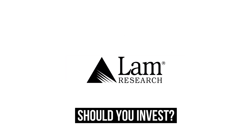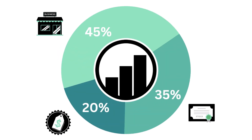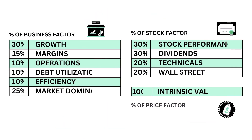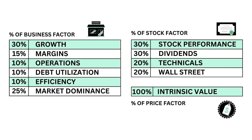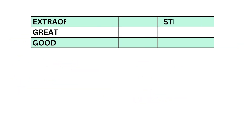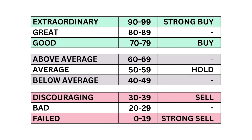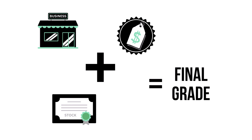Should you invest in Lamb Research? Let's analyze it on Growth Shares. This analysis is split into three factors: the business, the stock, and the price. Within each factor, a total of 11 metrics — from business growth performance to intrinsic value — are graded from 0 to 99, with 50 to 59 being considered average. When we've got the three factors graded, we combine them to get our final grade.